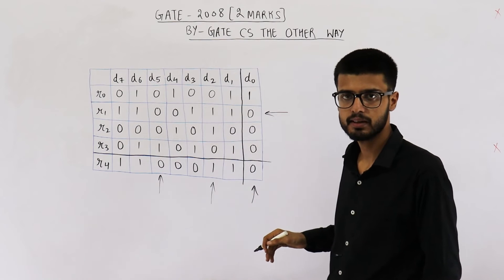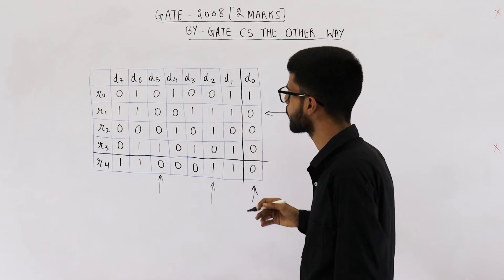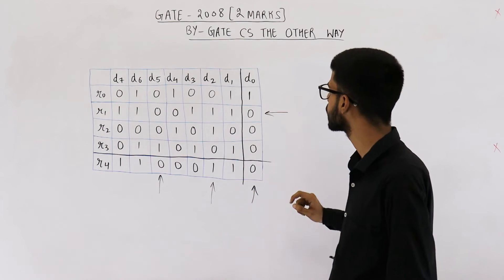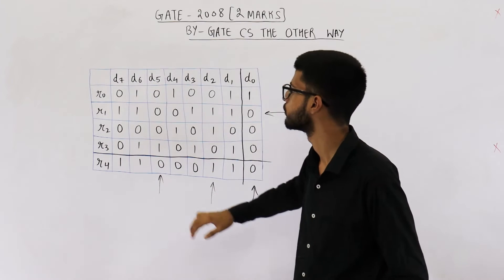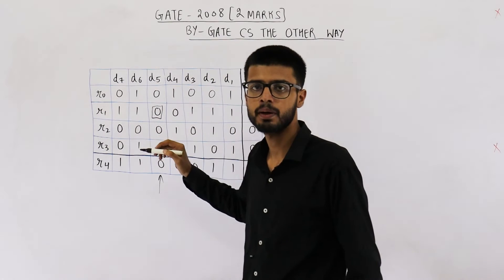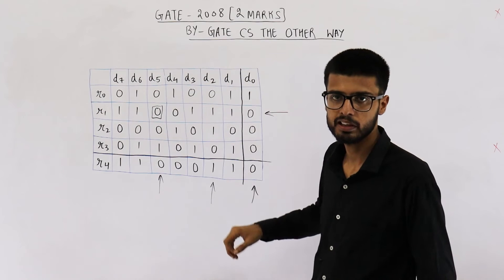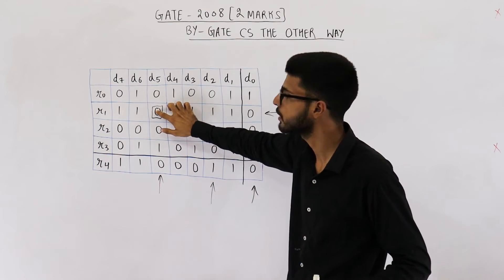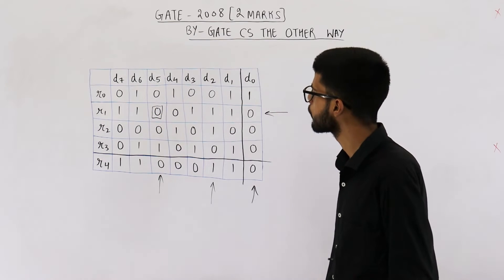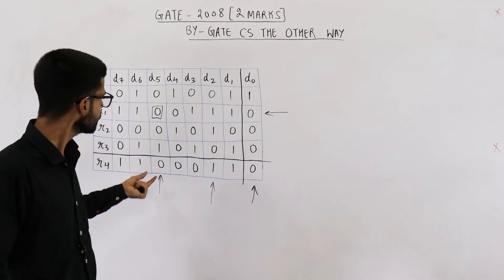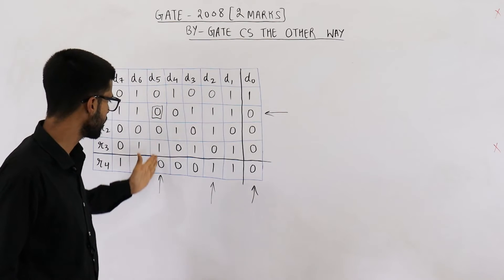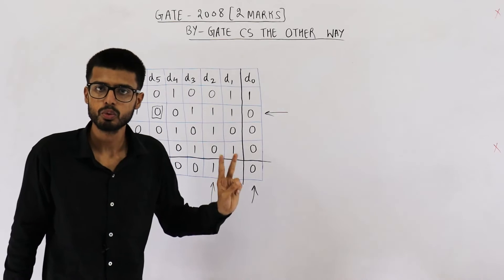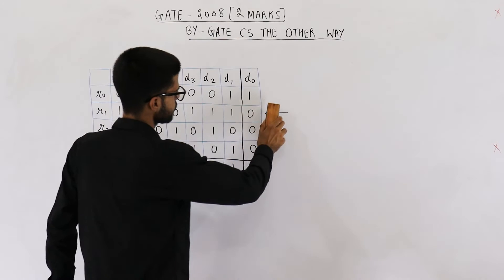They are asking: if this data is received by a receiver, what is the minimum number of errors? When you want to find the minimum number of errors, always pick a row which is erroneous and a column which is erroneous and take their intersection. So let's pick this row (R1) and this column (D5). Their intersection is this bit — and we assume this bit is erroneous. By doing so, we are correcting two errors at the same time — D5 is corrected and R1 is also corrected.